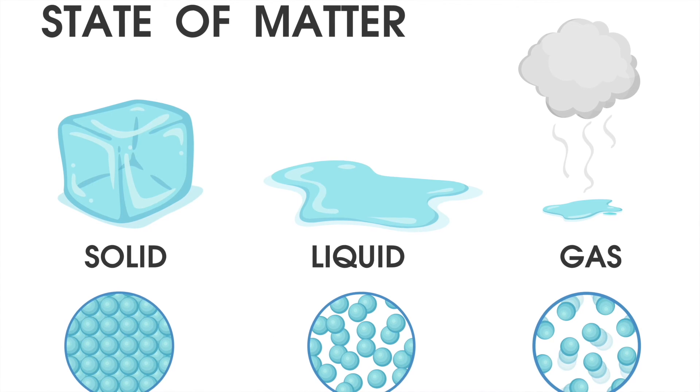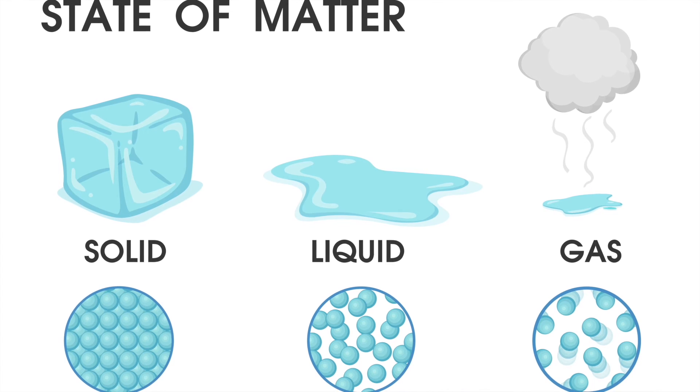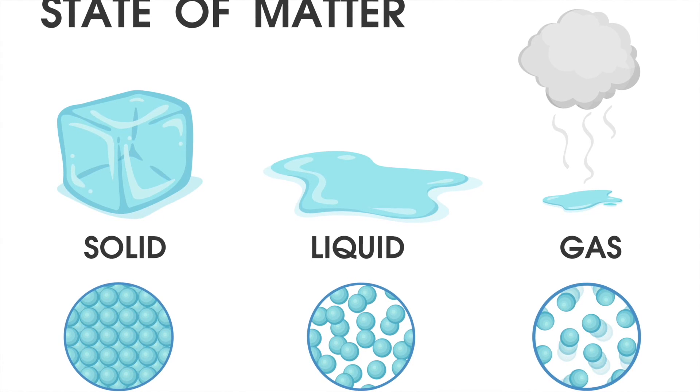An example of this could be ice. Ice starts off as solid, when you melt it it turns to liquid and when you boil it it becomes water vapor.